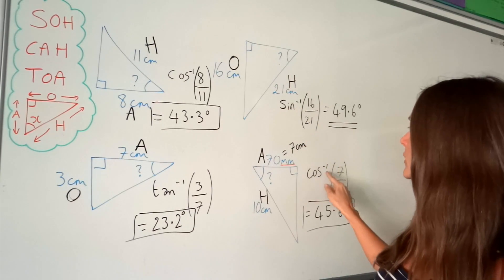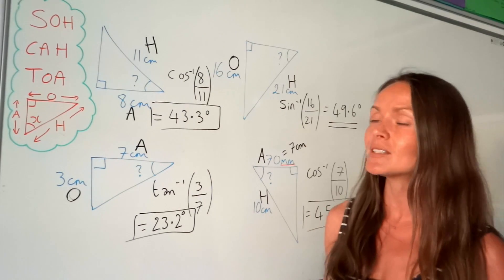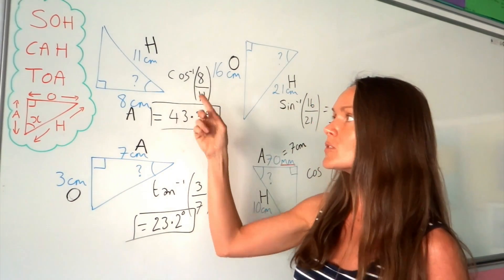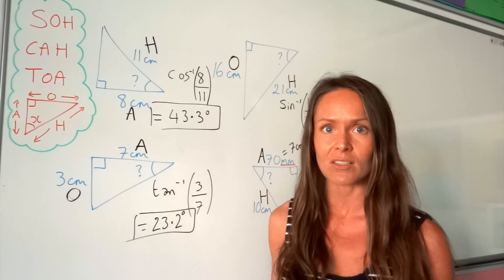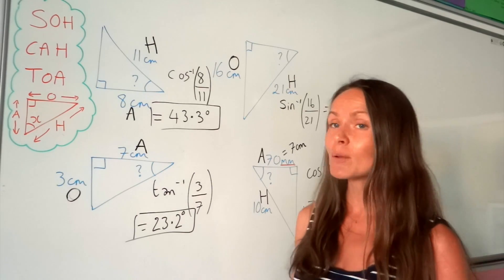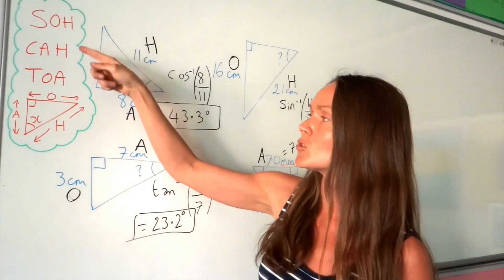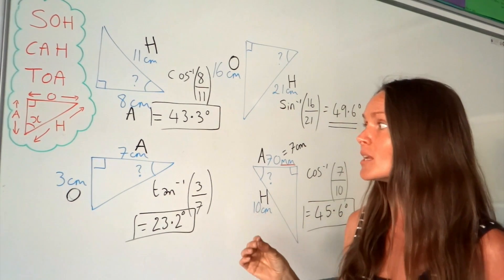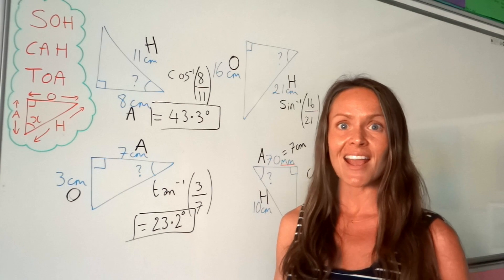Just remember: when you're finding angles you need to use minus 1 — press shift on your calculator to get that. In my next video I'll cover finding sides in right angle triangles using angles and sides, and in those questions you do not use minus 1. Also make sure you label those triangles correctly at the beginning, because if you label them wrong you'll end up choosing the wrong trig function.